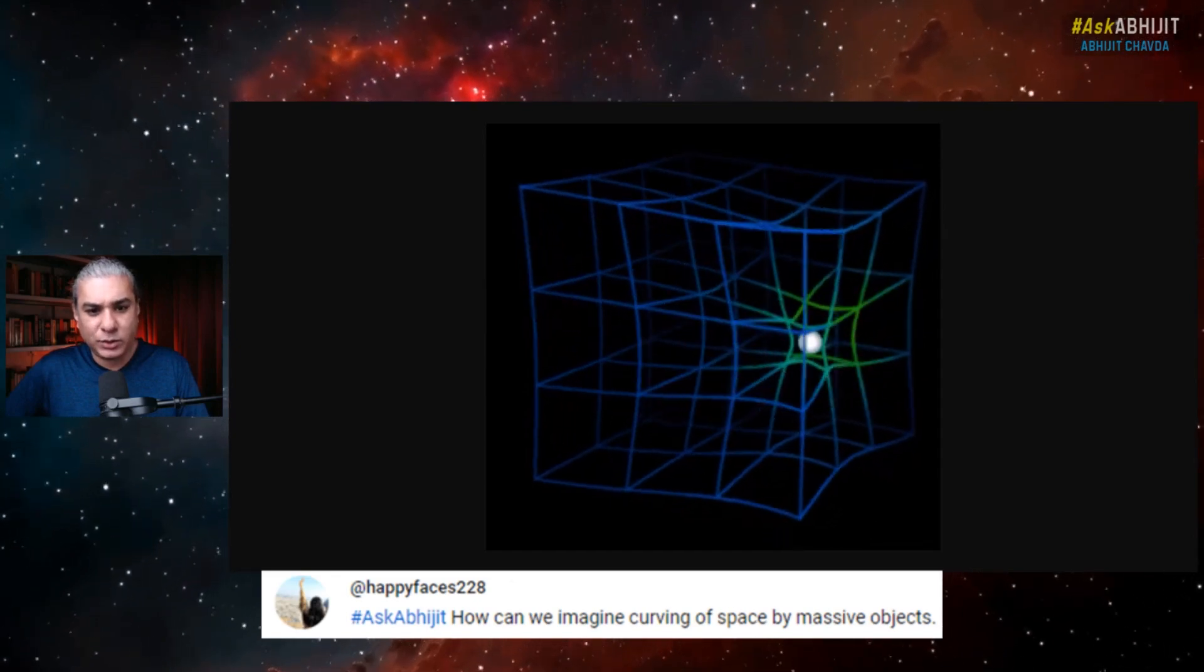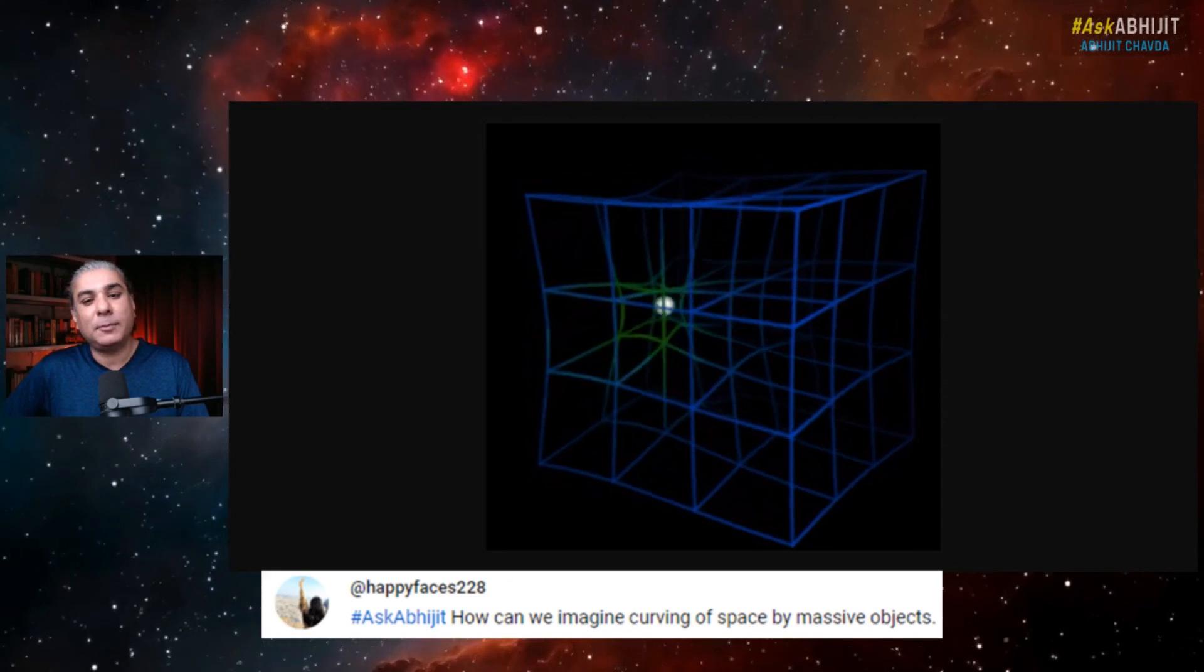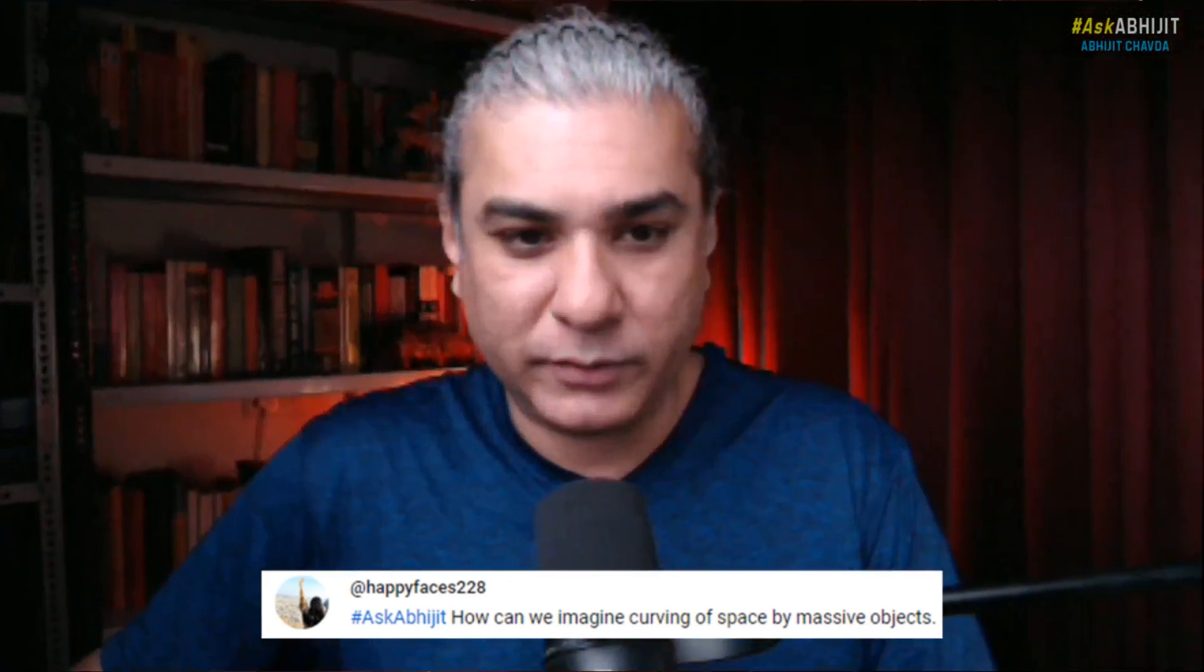That is how you can visualize or imagine the curving of space by massive objects, and also how the curvature of space bends the trajectories of these massive objects, the way they move.